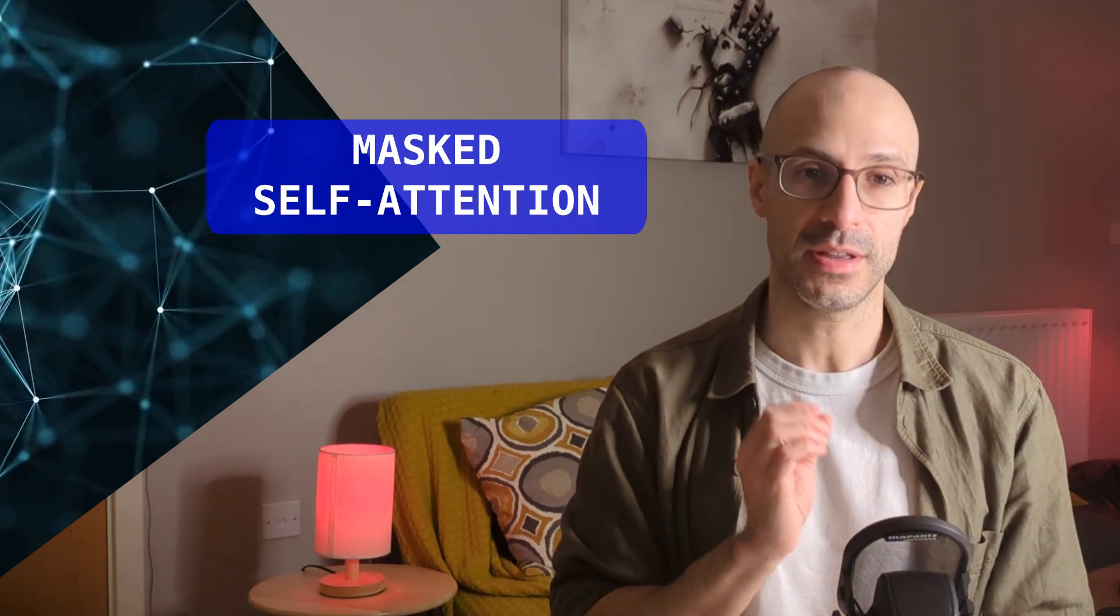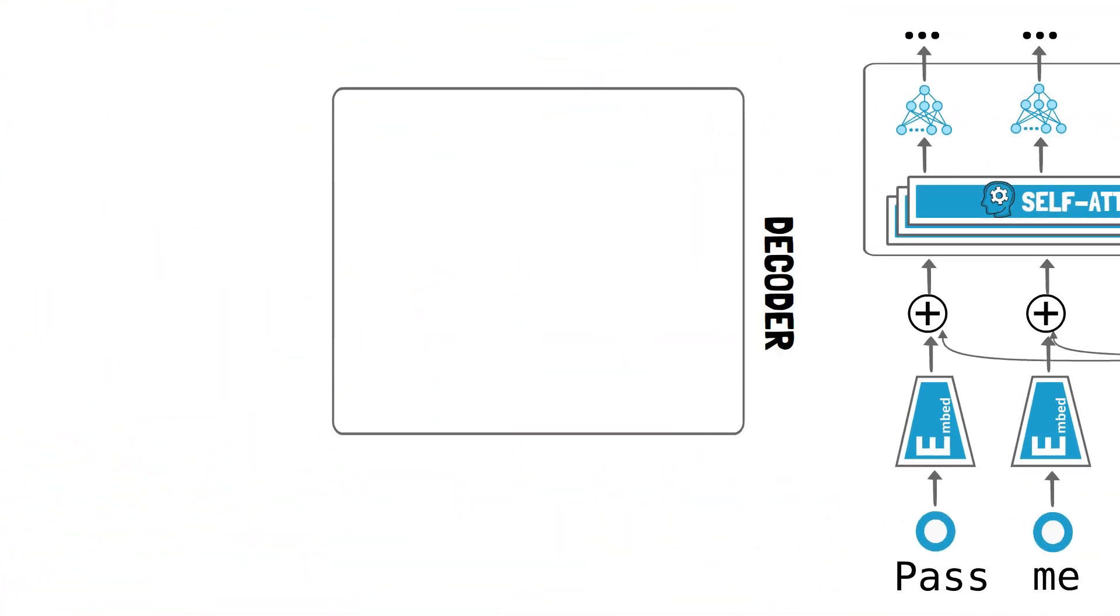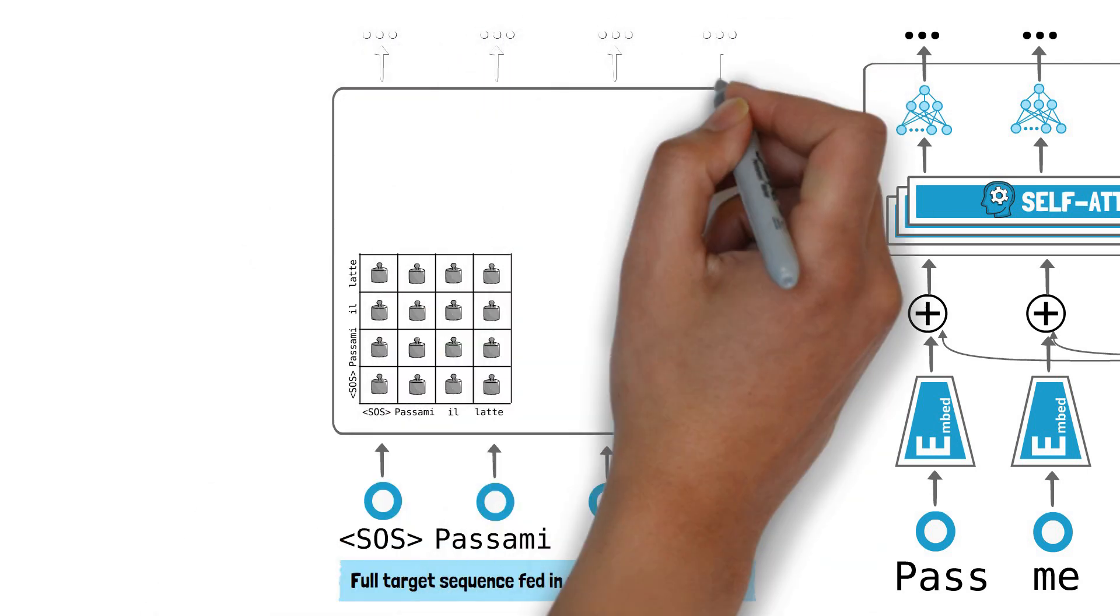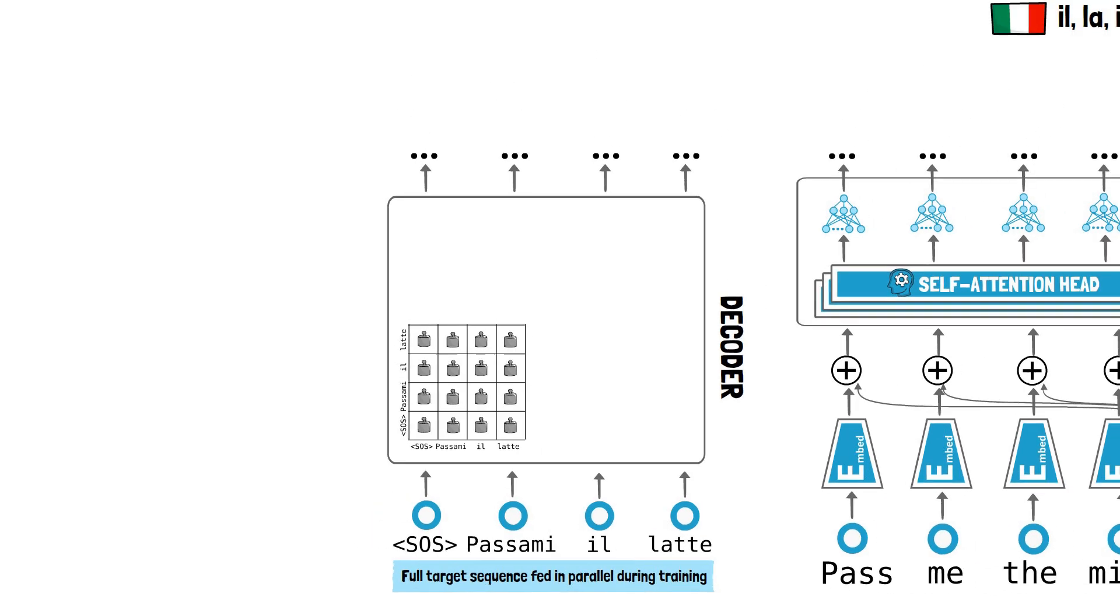As we did for the encoder, we can also remove recurrence in the decoder and replace it with self-attention. This will allow each step of the decoder to attend to every word that's been generated so far. However, we need to make a small adjustment to the attention mechanism in the decoder to ensure that we train the model correctly. This is called masked self-attention. Because there is no recurrence, during training we can feed the decoder the entire target sequence at once for parallel computation. As a result, each attention head in the decoder can calculate the full attention matrix and make predictions for the entire sequence simultaneously. However, there is an issue with this approach.